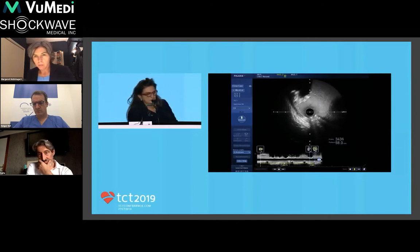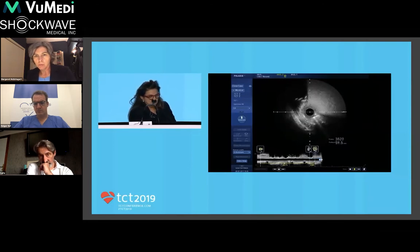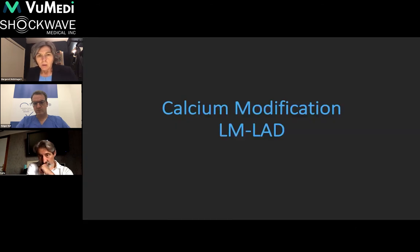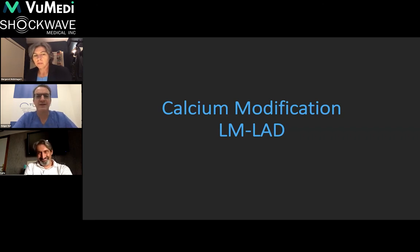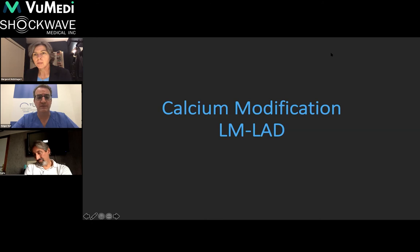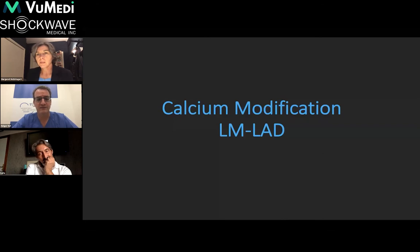At the bifurcation, the LAD can be seen coming out at the top with calcium on both sides — certainly over 180 degrees — and then a huge left main over 5mm with a calcific plaque in the roof extending all the way toward the ostium. The panel comments that this is very heavy calcification with a very difficult strategy question. The key question raised is whether calcium thickness exceeds 0.5mm on the IVUS images.